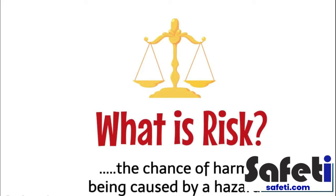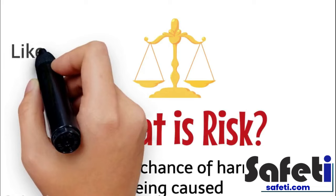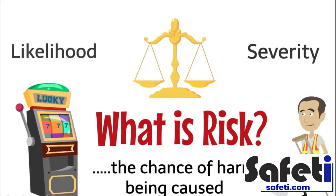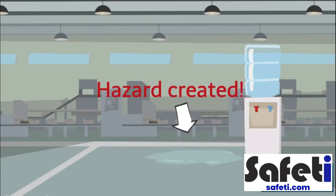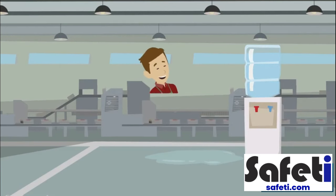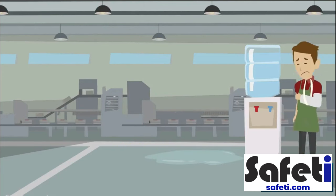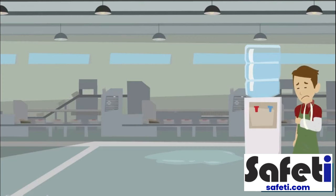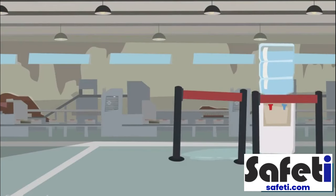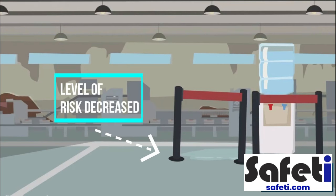When we do a risk assessment, we need to consider two aspects of risk: first, the likelihood or chance of the harm occurring, and second, the severity or degree of harm that would be caused. To put this into context: the water cooler on the factory floor has started leaking, creating a puddle on the floor — a slip hazard. If we don't do anything to remove or control this hazard, there is a significant risk that someone could slip and injure themselves. However, if we put simple control measures in place, such as a barrier, the chances of someone coming to harm are lessened — the level of risk has decreased.